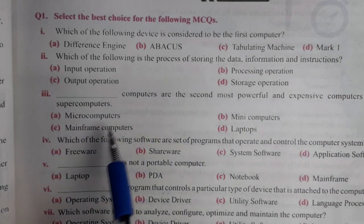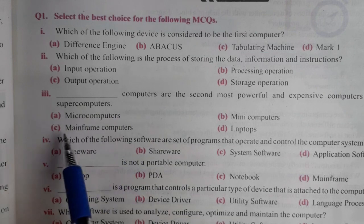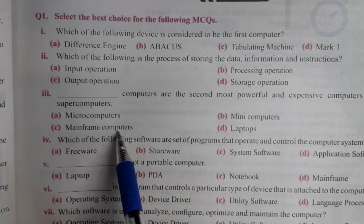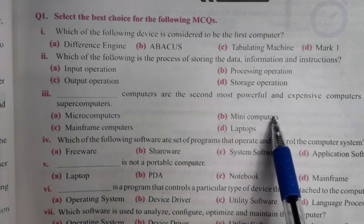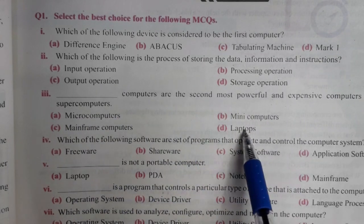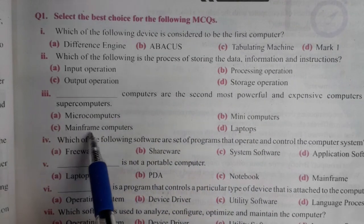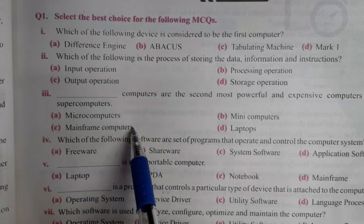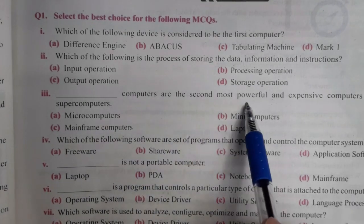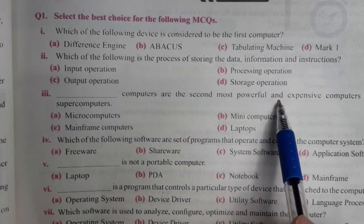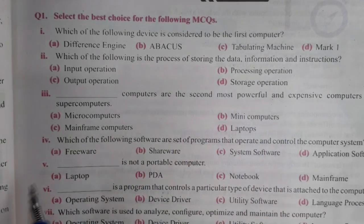Dash computers are the second most powerful and expensive computers after supercomputers. Options: micro computer, mainframe computer, mini computer, laptop. The correct answer is mainframe computer — it is the second most powerful computer after the supercomputer.